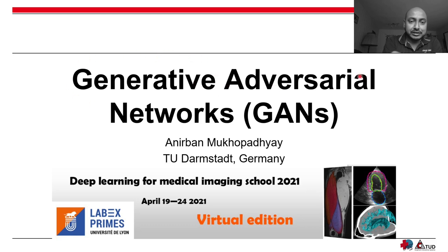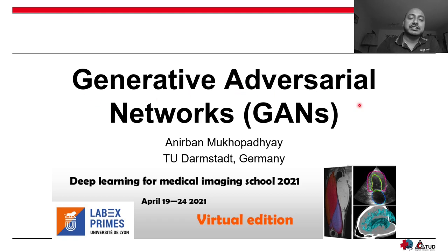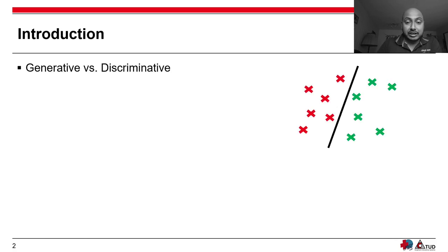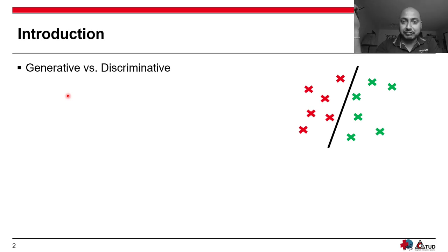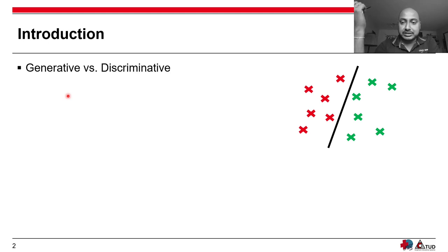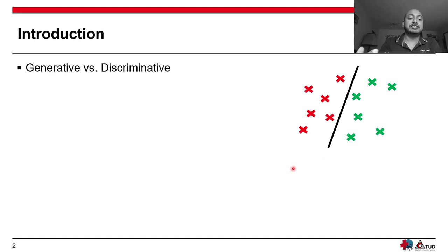GANs has three parts: the generative part, the adversarial part, and the network — which by now everyone knows is about deep neural networks. To understand the first two words, generative and adversarial, let's start with the generative part. I'll use contrast: I'll first explain discriminative learning, which most of you are familiar with, and then talk about generative modeling. The typical scenario of discriminative modeling is to find the decision boundary separating two classes.